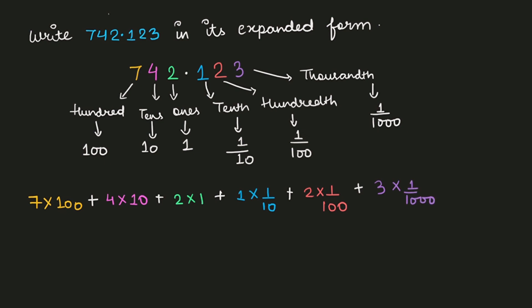So here we go. This is the expanded form of the decimal number 742.123. I hope you like this video. For more such videos stay tuned to me and I see you soon in the very next video. Take care. Bye.